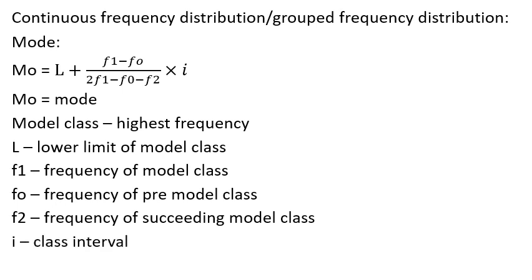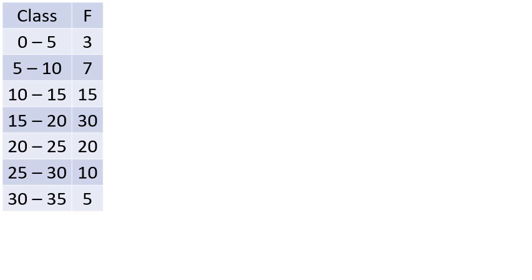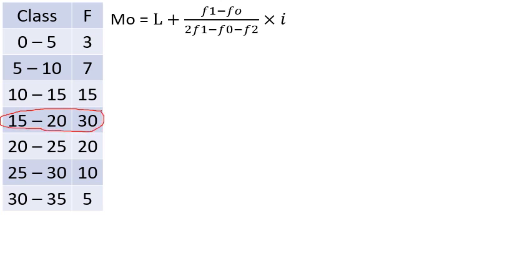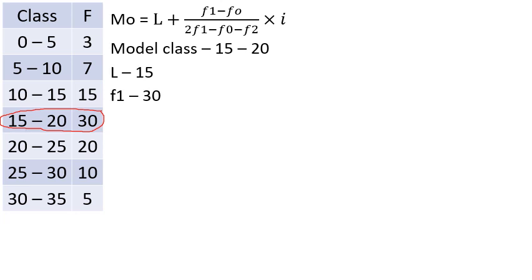In this formula, F1 is the frequency of the modal class, F0 is the frequency of the preceding class, and F2 is the frequency of the succeeding class. The class interval starts from 0 to 5. We identify the modal class as the one with the highest frequency, and L is its lower limit. The class interval i equals 5.